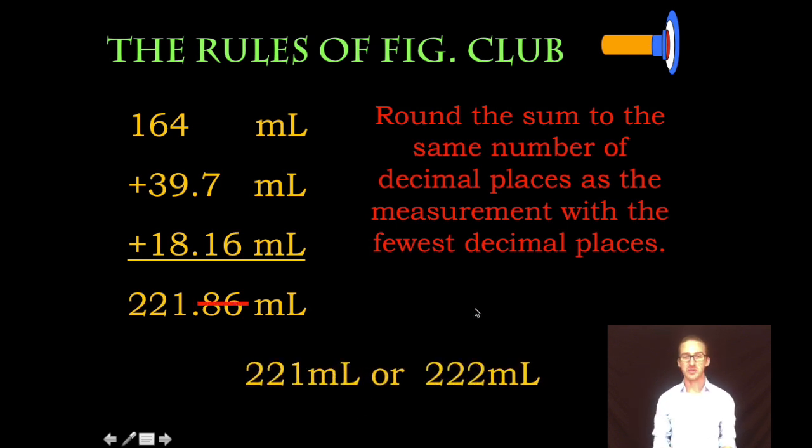Now be careful here. Even in high school, sometimes we struggle with rounding. Are we going to round this number to 221 or 222 milliliters? Answer: 222. Eight will bump that up. Boom, sig figs club.